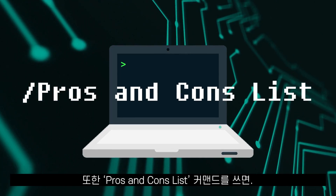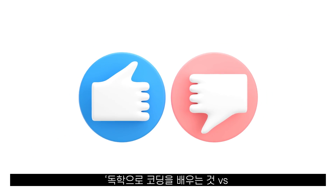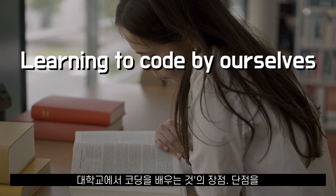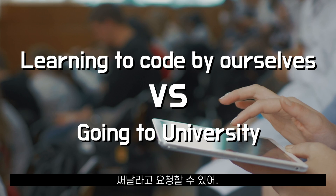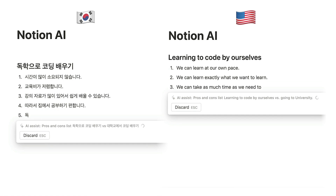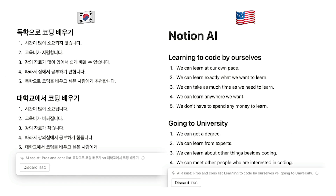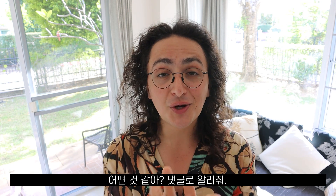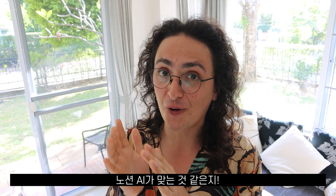Using the 'pros and cons list' command, we can ask Notion to tell us the pros and cons of learning to code by yourself versus going to university. Let me know in the comments if you think the AI makes good points or not.